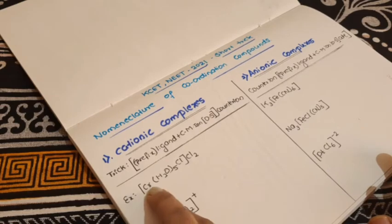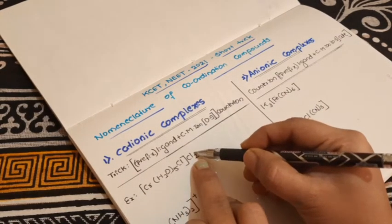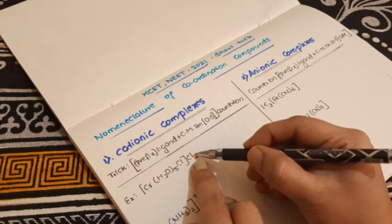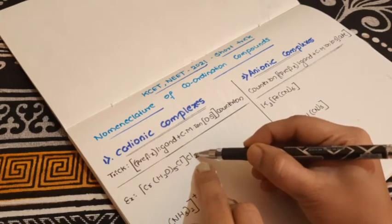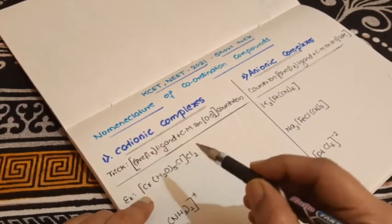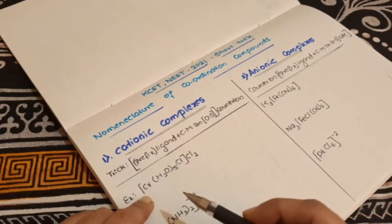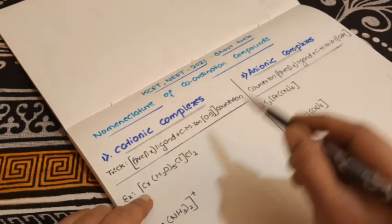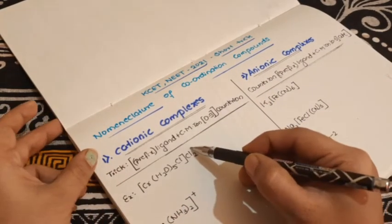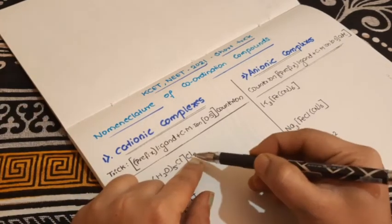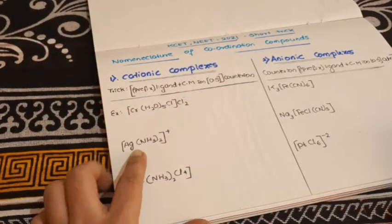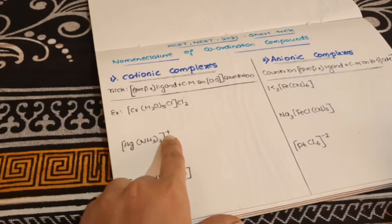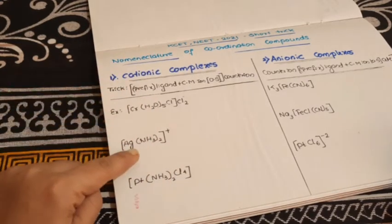The coordination sphere decides whether the complex is cationic or anionic. Concentrate on the counter ion. The counter ion here is chloride, which is a halogen — its charge is negative. So if the counter ion is negatively charged, obviously the coordination sphere should be positively charged. That is how you identify a cationic complex. If no counter ion is present but a charge is already given, you can directly identify it as cationic.